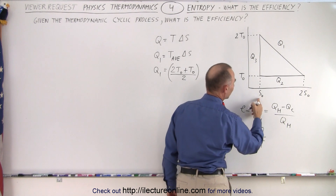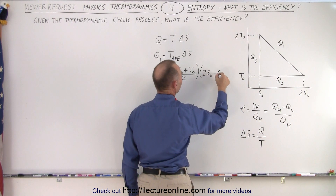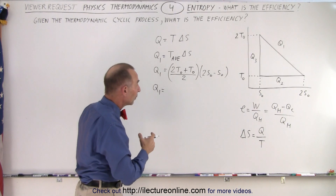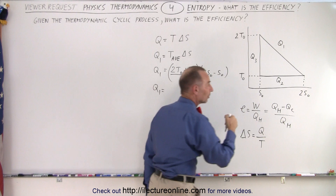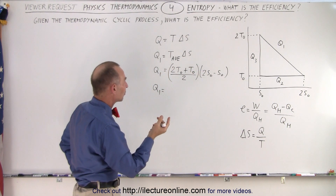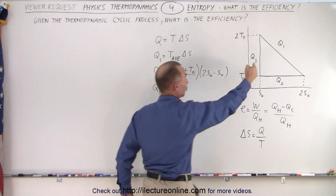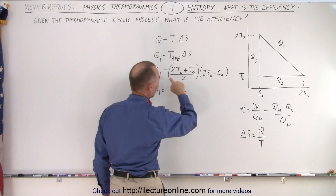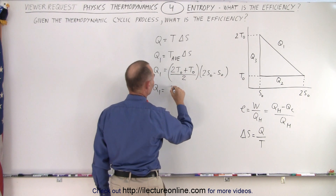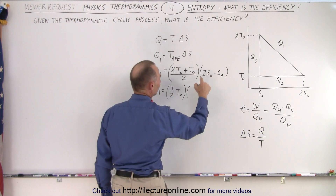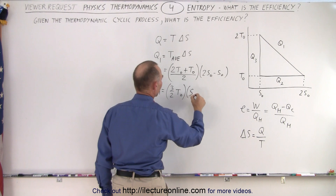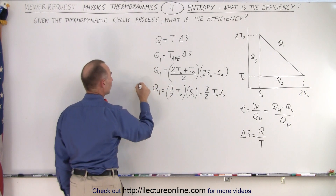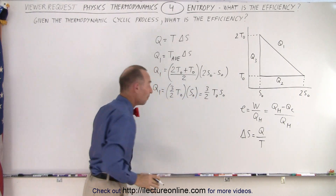Delta S is the change in entropy — we go from S sub-naught to 2S sub-naught, so that's 2S sub-naught minus S sub-naught. Q1 is heat added because entropy increases at the highest temperature. We get 3T sub-naught divided by 2, which is 3/2 T sub-naught, multiplied by S sub-naught. So Q1 equals 3/2 T sub-naught S sub-naught. That is going to be Q hot because it's the heat added to the system — a positive quantity.